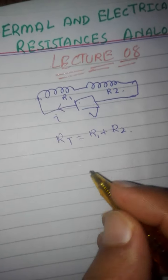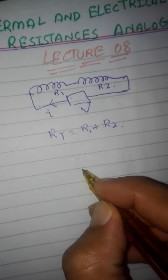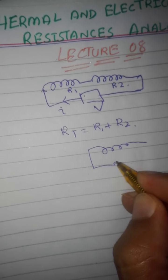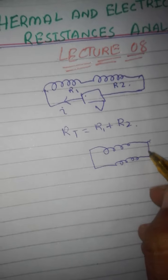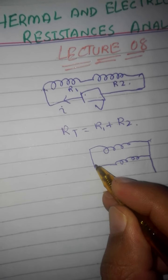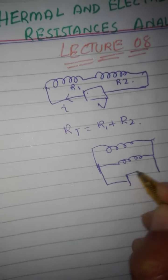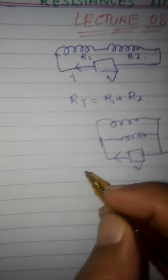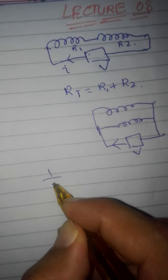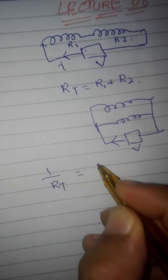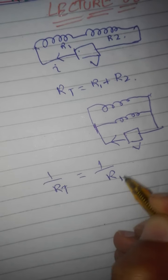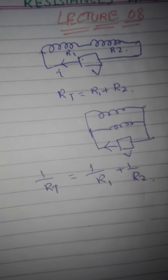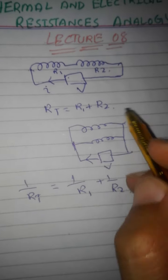Now if two resistors are connected in parallel, the overall resistance is equal to the reciprocal of the sum of the reciprocals of the resistances.